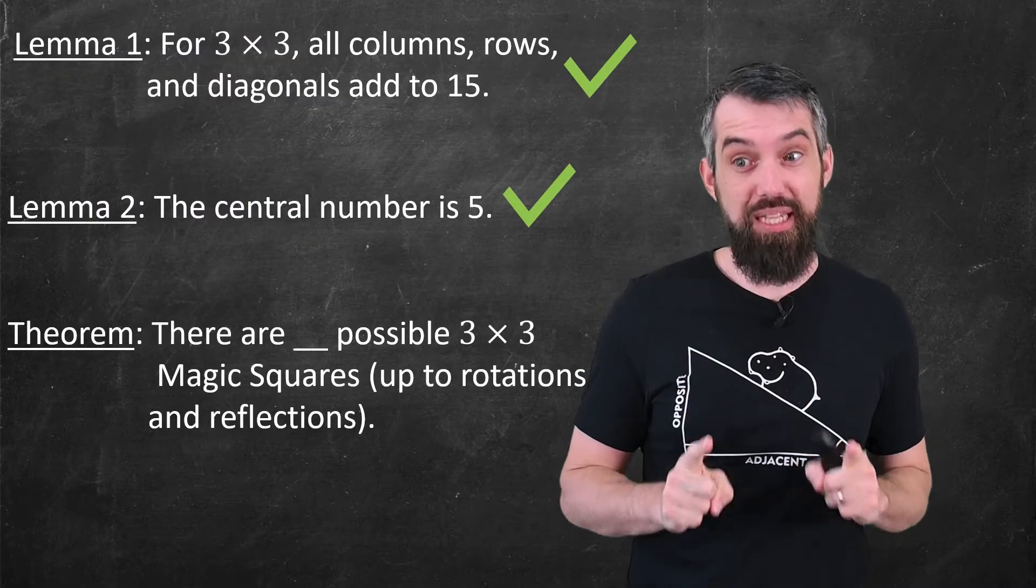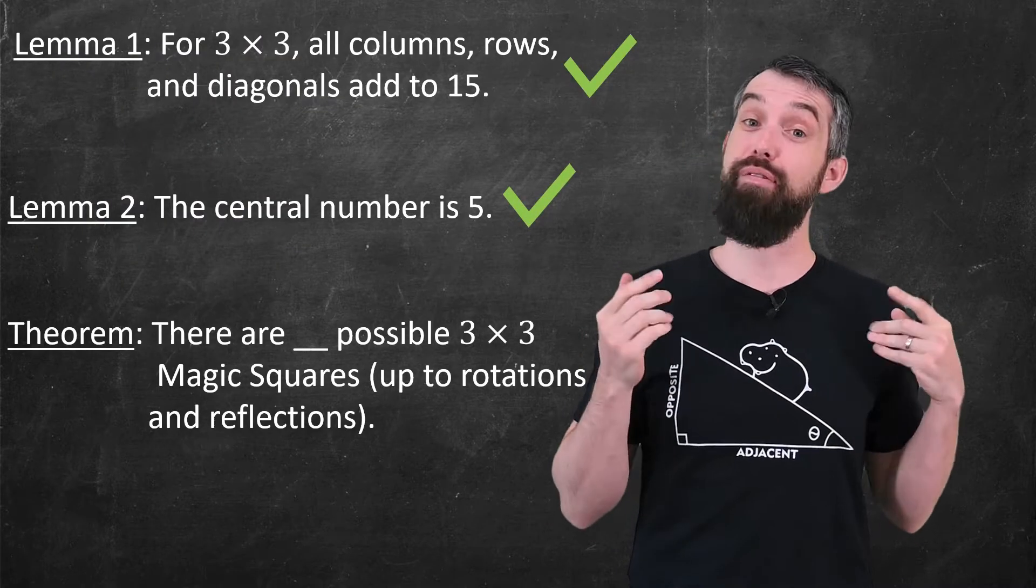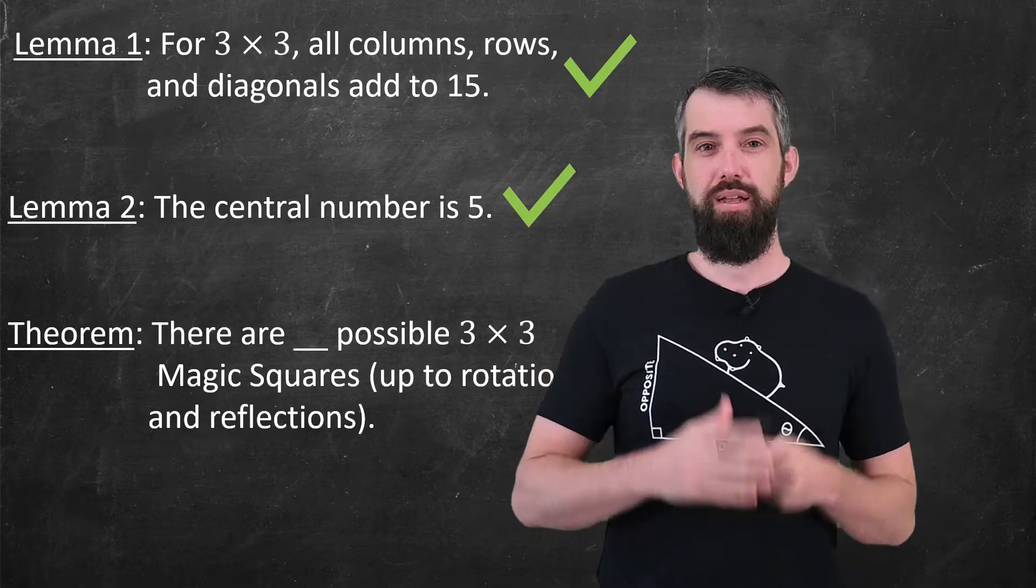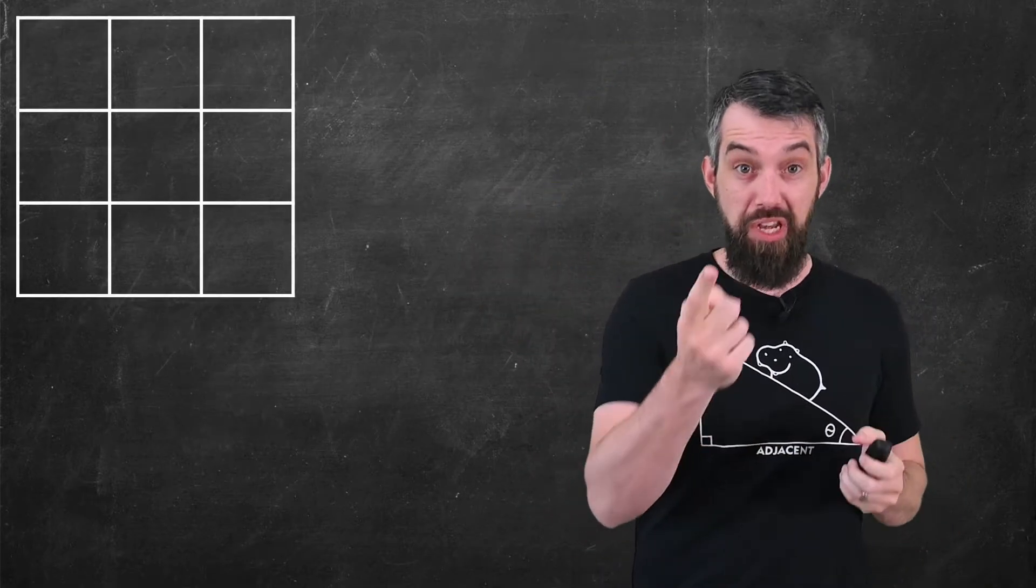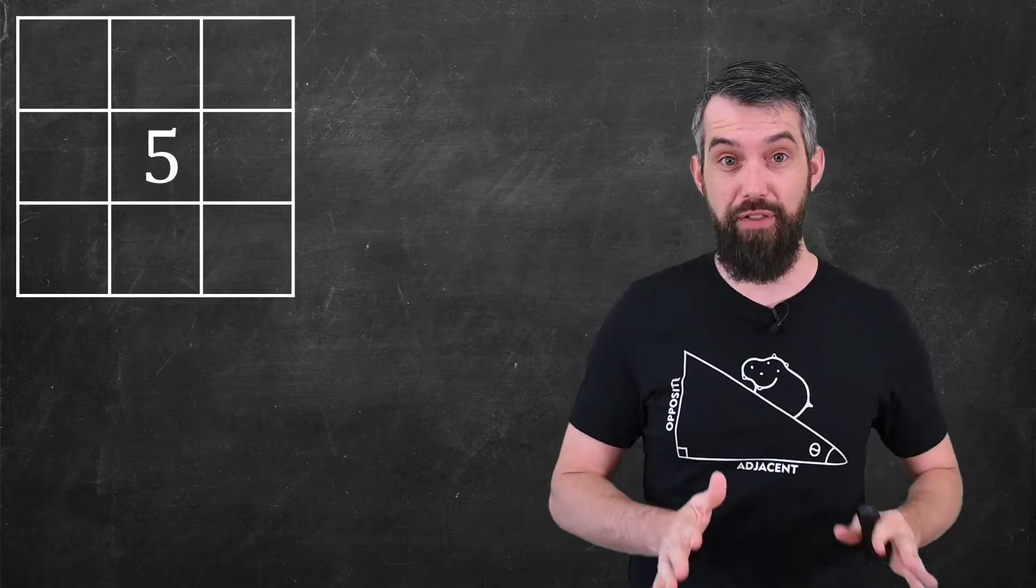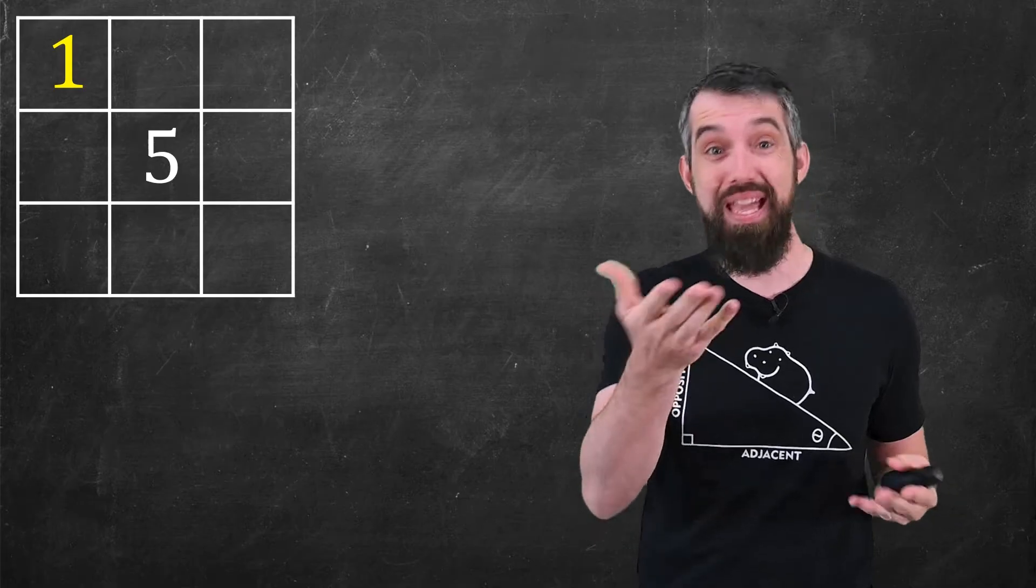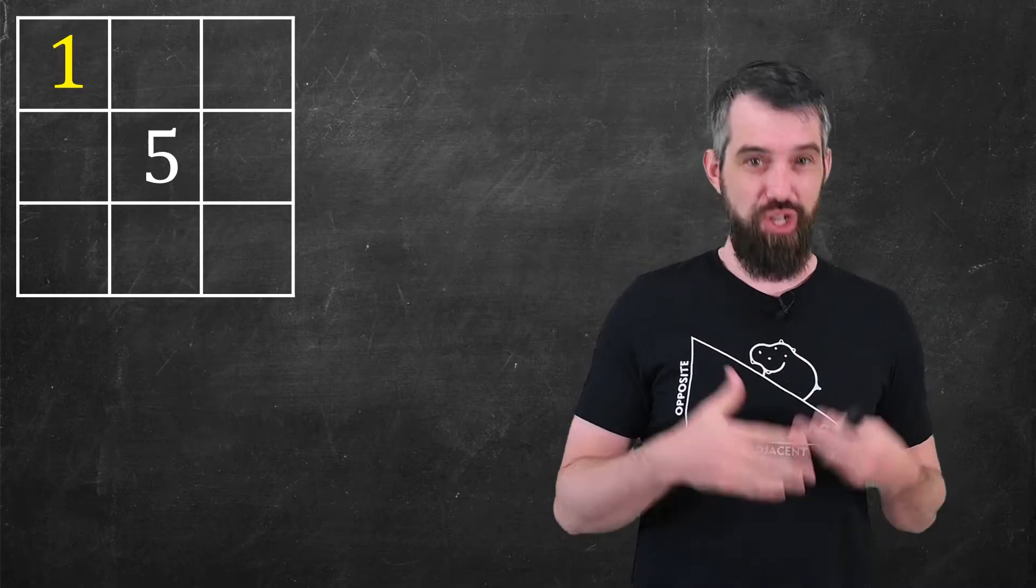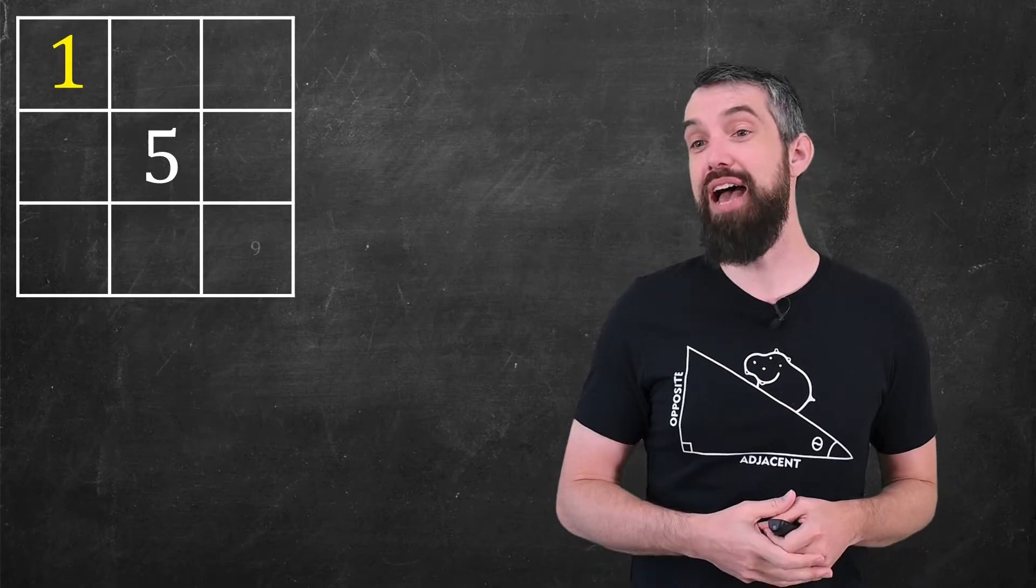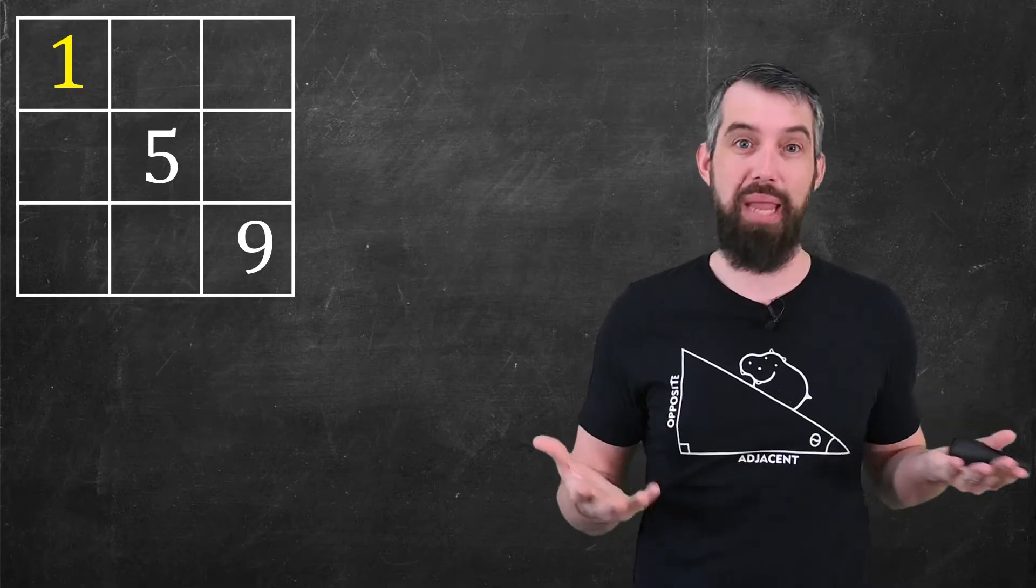Okay, now to my theorem. I want to use these lemmas to figure out the total number of 3 by 3 magic squares. Let's start with a generic grid. We know the center point, that's a 5, we can fill that in already. Let me conjecture that I was to put a 1 in a corner. Could be any of the four corners, I'll do this one. Going along that diagonal, that means I have to have a 9 in the final spot to be able to add up to 15.